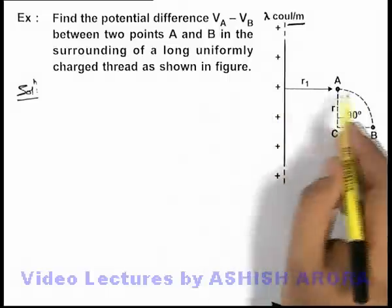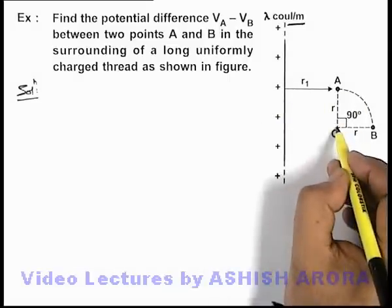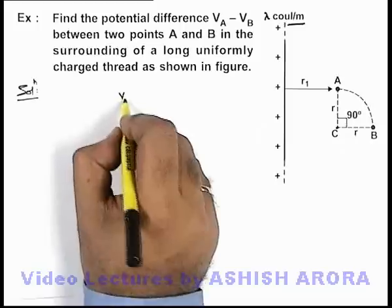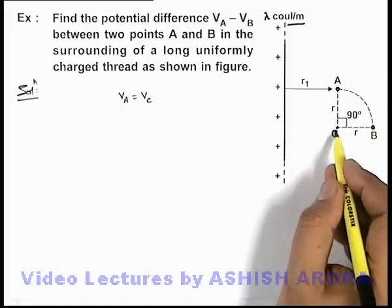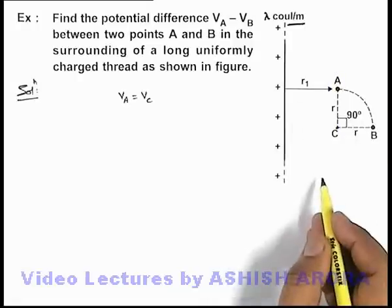And as electric field exists in radially outward direction, potential at point A will be certainly equal to that of C because both of these points will lie on the same equipotential surface.